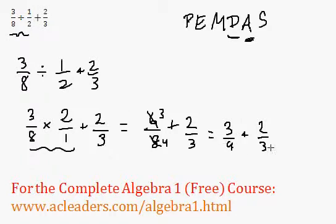Now we need a common denominator between 4 and 3, and that will be 12. So I can multiply the first fraction by 3 over 3 and the second one by 4 over 4.